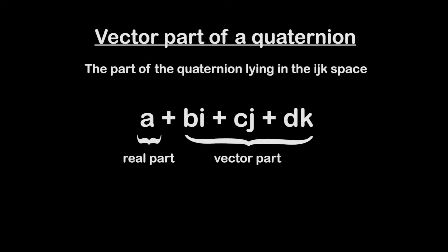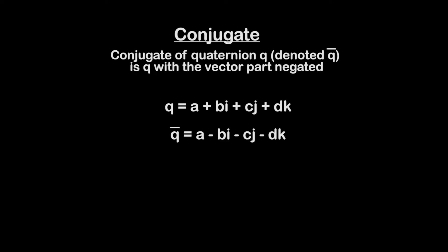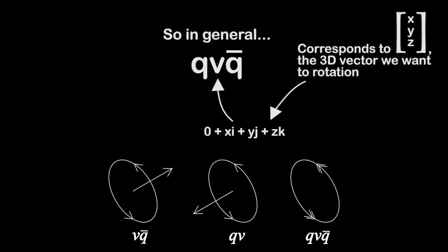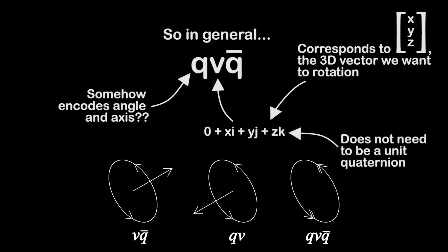First, some terminology. The vector part of a quaternion is the component that lies in the i, j, k space, whereas the real part is the component lying on the real axis. A quaternion whose real part is zero is called a pure quaternion. The conjugate of a quaternion q is denoted q bar, and it's simply q with the vector part negated. So to describe the general form of what we just did a moment ago, we can write q v q conjugate, where v is a pure quaternion whose vector part is the 3d vector that we want to rotate. And q somehow describes the angle and axis to rotate about. And v does not need to be a unit quaternion, only a pure quaternion, so don't mix those two up.